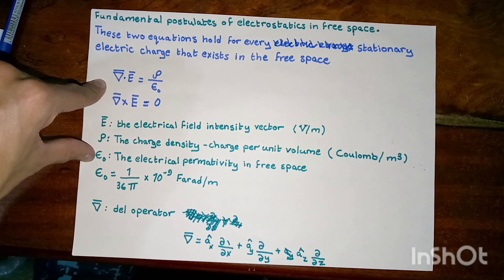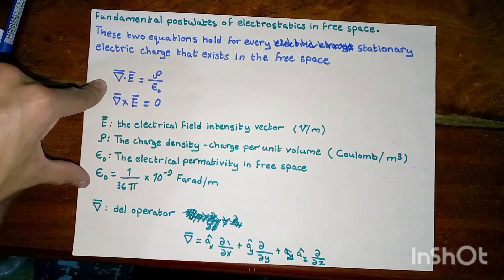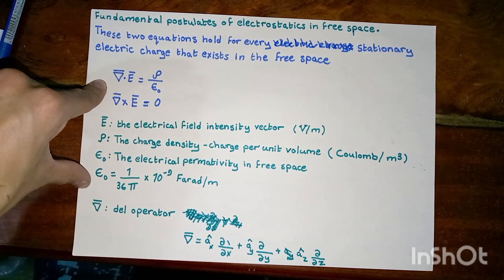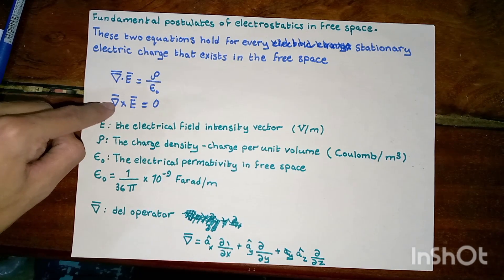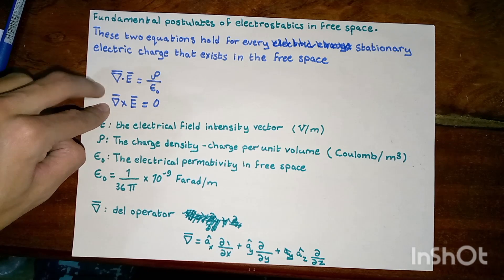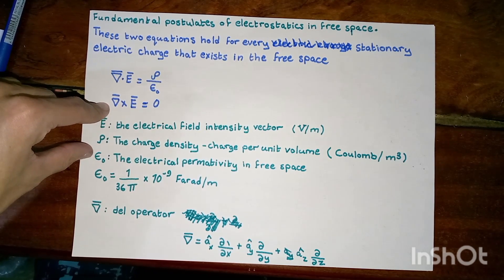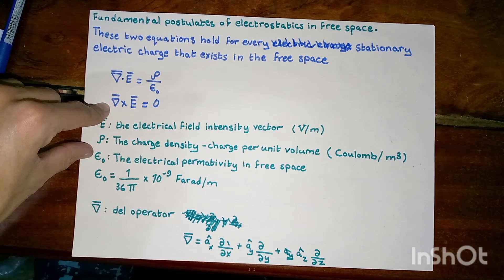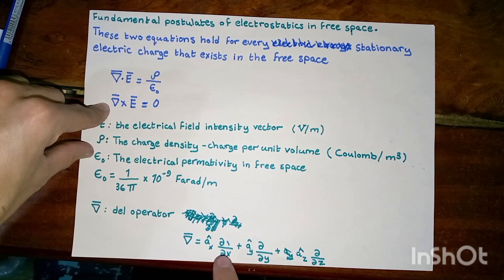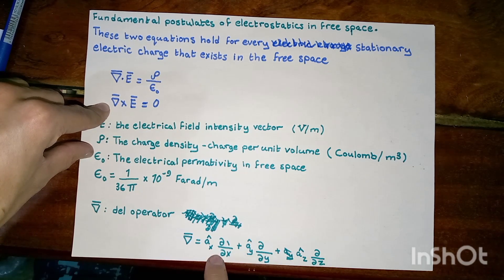Epsilon sub-zero is the electrical permittivity in free space; it is a universal constant equal to 1 over 36π times 10 to the power of minus 9. This symbol which looks like a twisted delta is the del operator, representing the partial differentiation at x, y, and z directions, and it is a vector quantity.